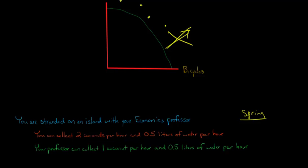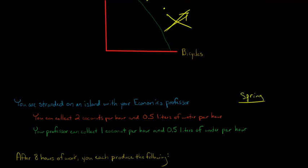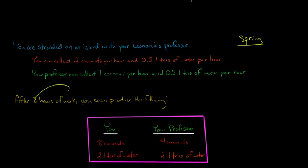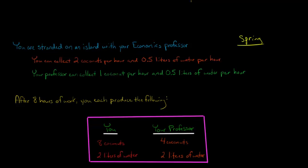Let's pretend that you each worked for eight hours. You spend four hours collecting coconuts, so you get eight coconuts, and then you spend the other four hours collecting water — four times half a liter per hour gives you two liters of water. Your professor also spends four hours on coconuts and four hours on water, so he ends up with four coconuts and two liters of water. This is just one combination of goods — you could spend six hours on coconuts and two on water, for example.